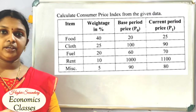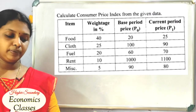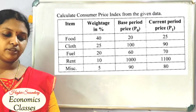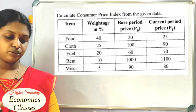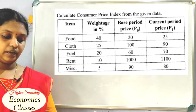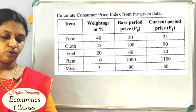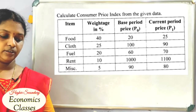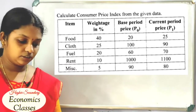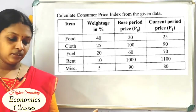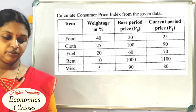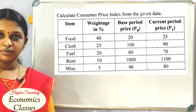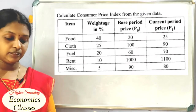Calculate CPI — the Consumer Price Index — from the given data. The items are: Food, Cloth, Fuel, Rent, and Miscellaneous. We have the Weightage in Percentage.